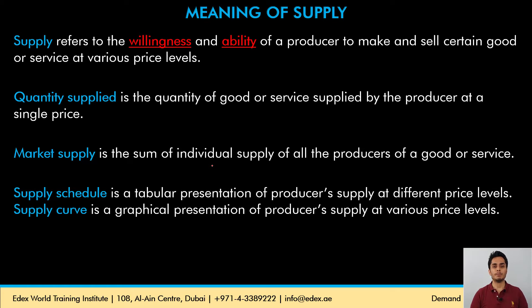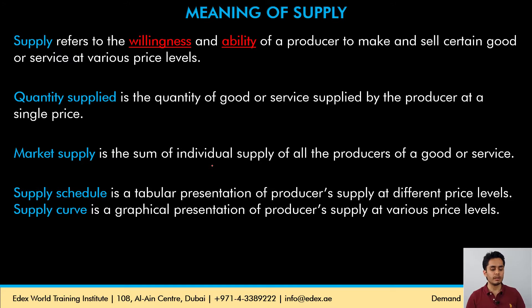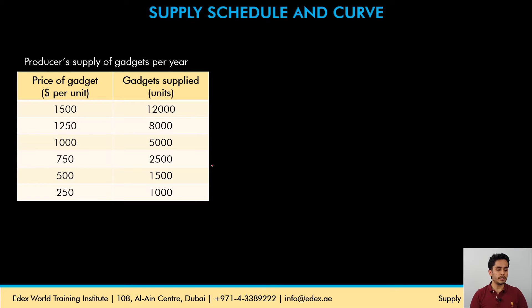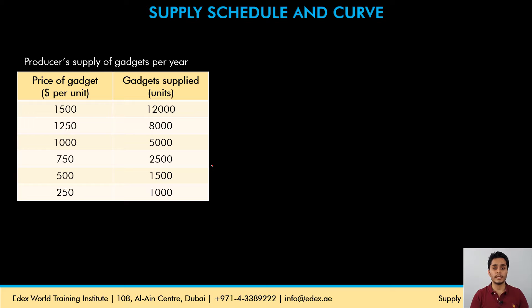The supply schedule refers to the tabular presentation of the producer's supply quantity at different prices. When that tabular presentation is plotted on a graph, what we get is the supply curve. Here we have a supply schedule. In the previous video on demand, I showed you the market demand for gadgets. In this video, we're going to see the market supply of gadgets. Market demand was by the consumers; market supply is by the producers.